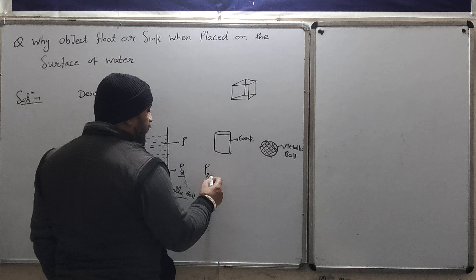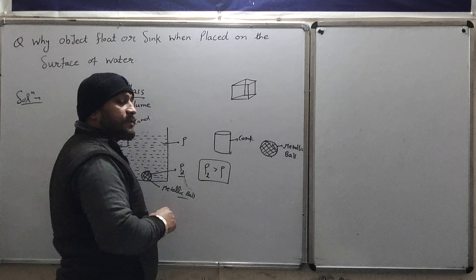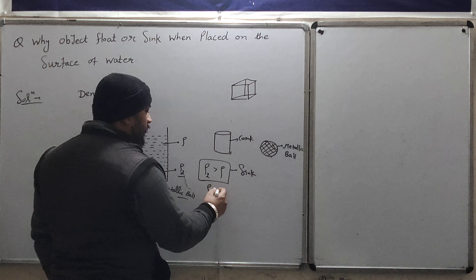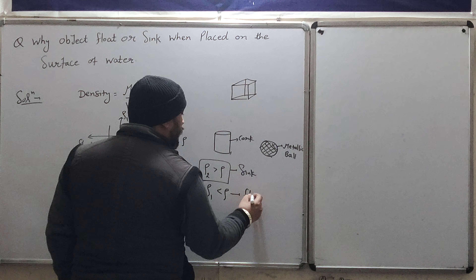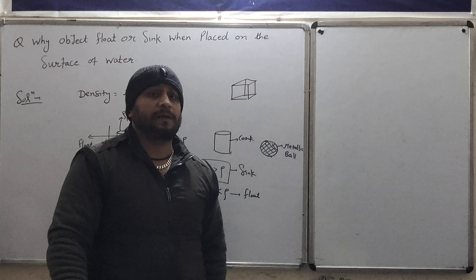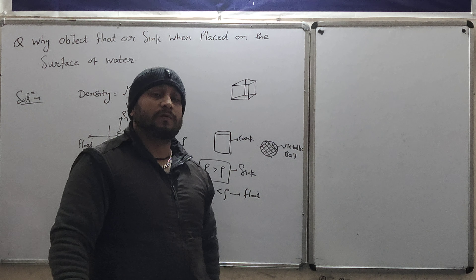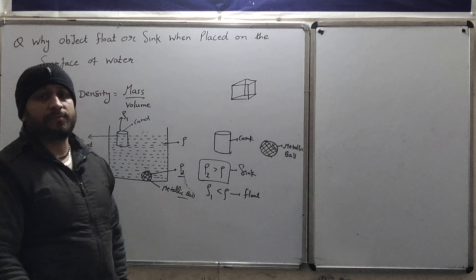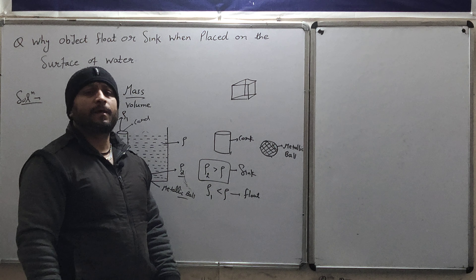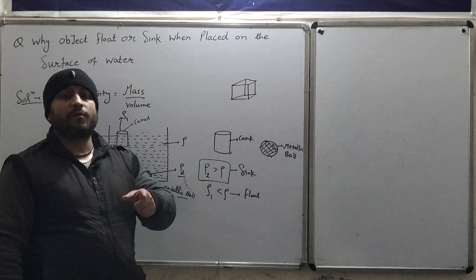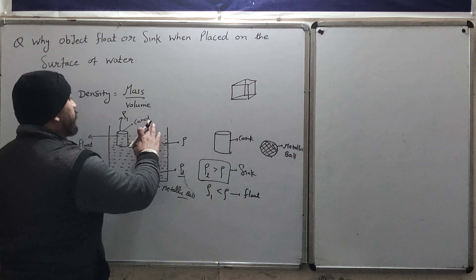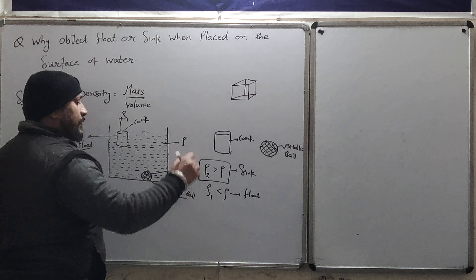If the density of water is rho, the density of the substance cork is made of is rho1, and the density of the metallic bowl is rho2 — then remember: every object whose density is less than the density of water will float on the water's surface. And every object whose density is greater than the density of water will sink. So the metallic ball's density rho2 is greater than water's density, so it sinks. And the cork's density rho1 is less than water's density, so it floats.